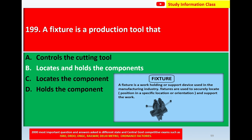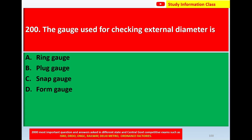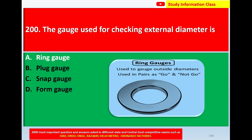Next, question number 200: the gauge used for checking external diameter is. Option A: ring gauge. Option B: plug gauge. Option C: snap gauge. Option D: form gauge. The correct answer is option A, ring gauge. This is the picture of ring gauges — used to gauge outside diameters, used in pairs as go and not-go. For question 200, correct answer is option A, ring gauge.